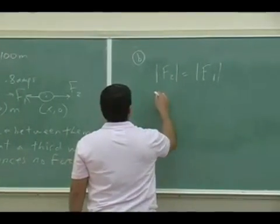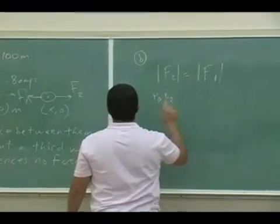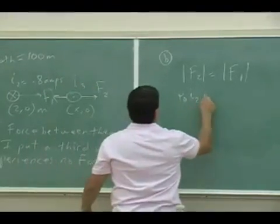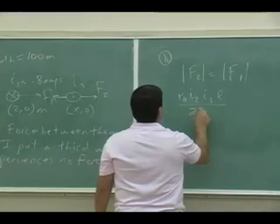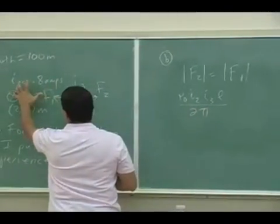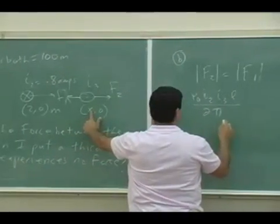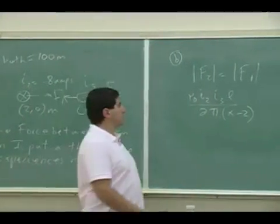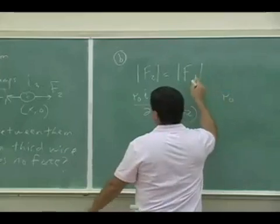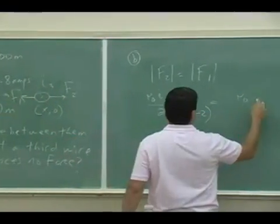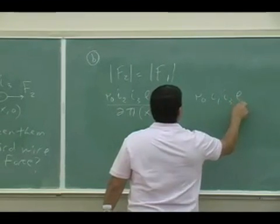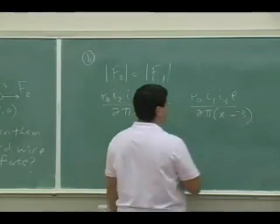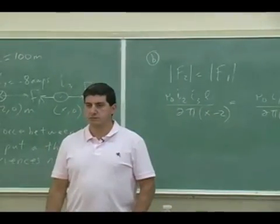So the magnitude of F₂ is μ₀I₂ times the current of that, which we can call I₃ times L divided by 2π times this distance between this and this. So the absolute value of that distance, the absolute value of X minus 2. That's going to equal μ₀ times the force between wire one and three. So I₁, I₃ times L over 2π times X minus negative 3.